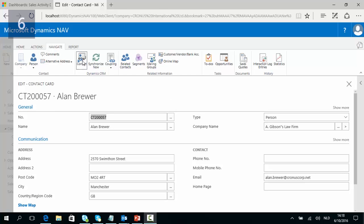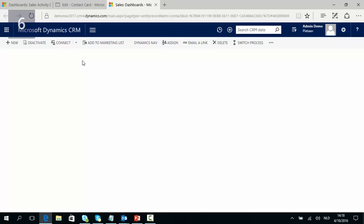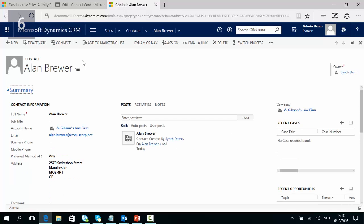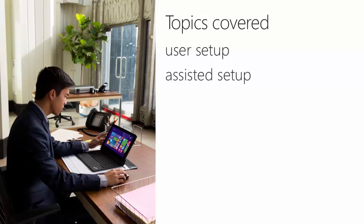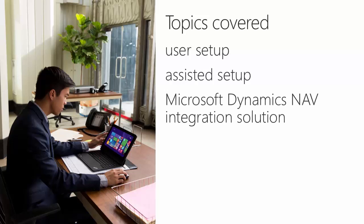If I click now on Contact, the corresponding CRM record for Allen Brewer is now opened up. So we integrated NAV contacts with CRM contacts in six simple steps: we checked the user setup, we executed the assisted setup, we checked the NAV integration solution, we assigned user roles, and we configured coupling.